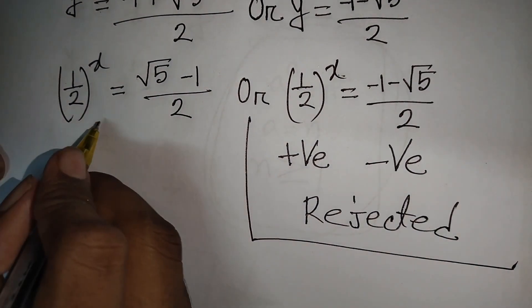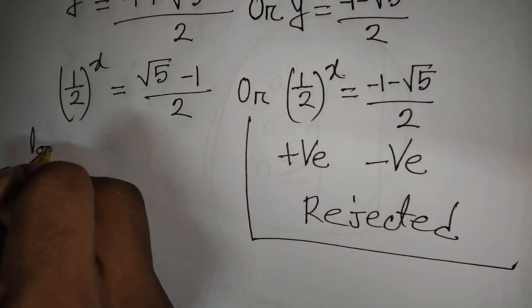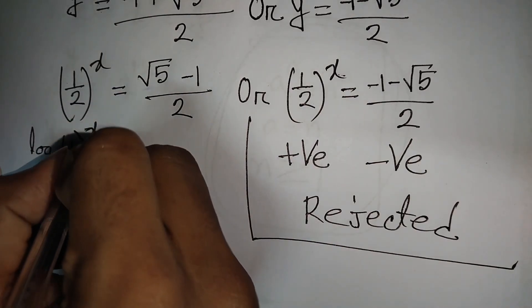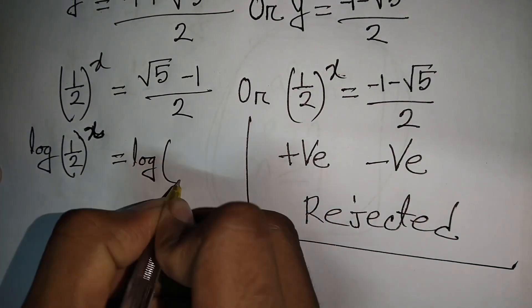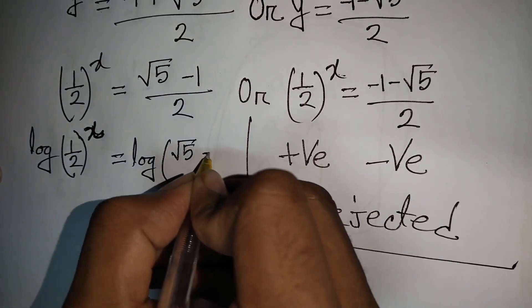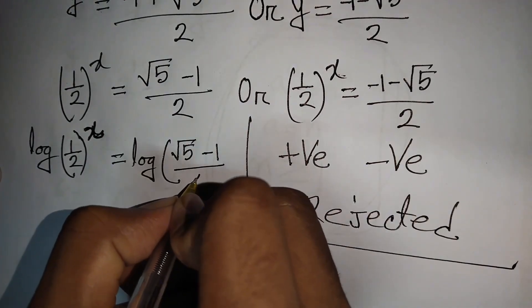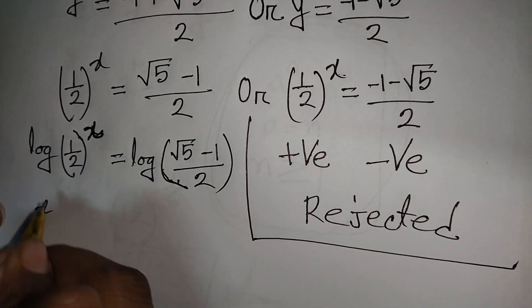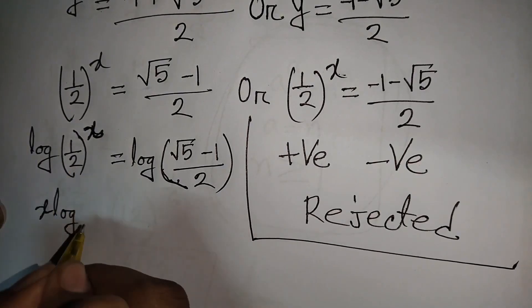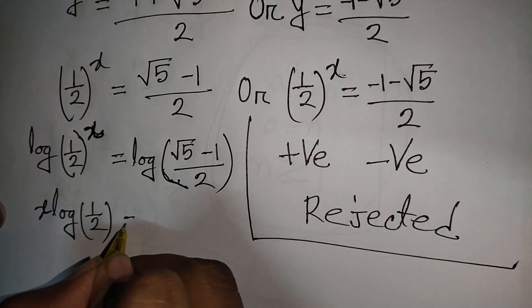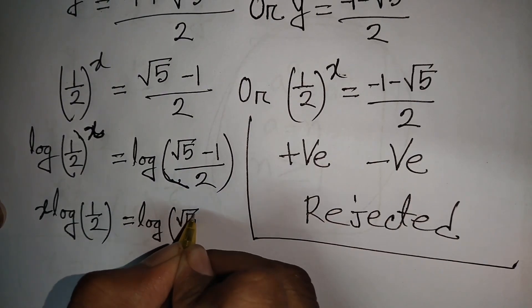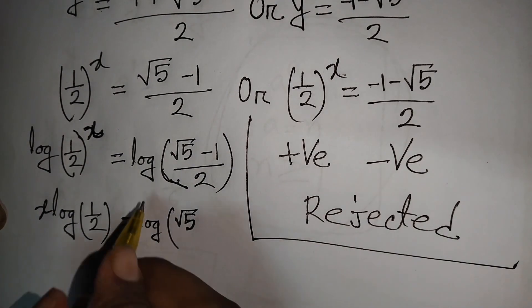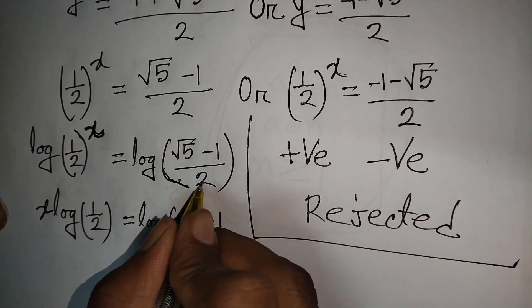From the valid case, we take log of both sides: log((1/2)^x) = log((√5 - 1)/2). This gives x·log(1/2) = log((√5 - 1)/2).